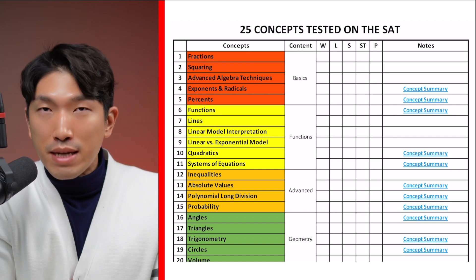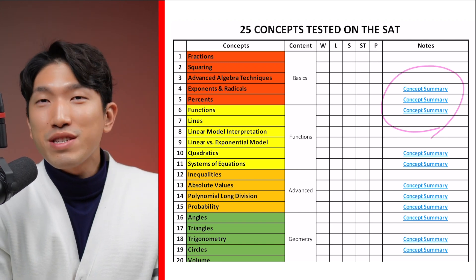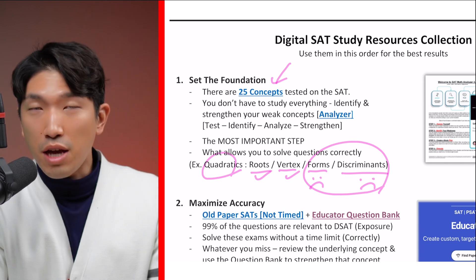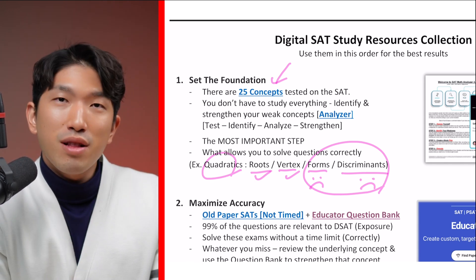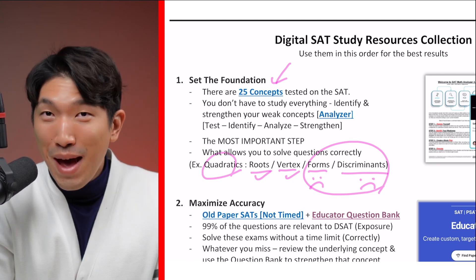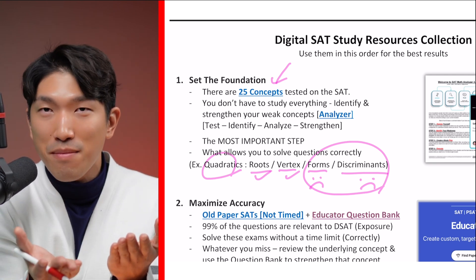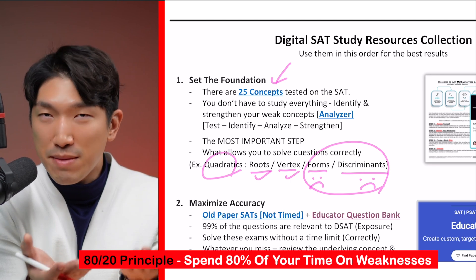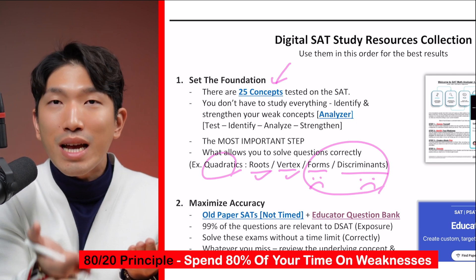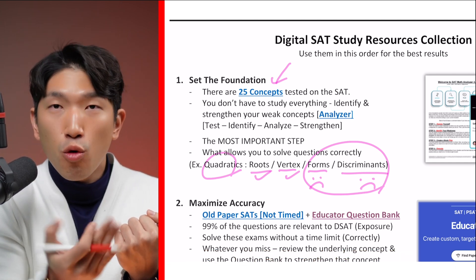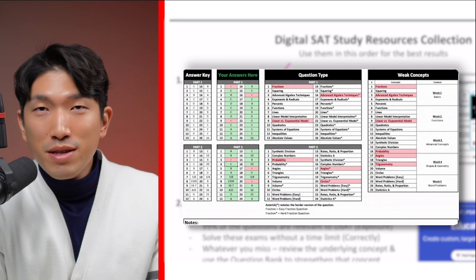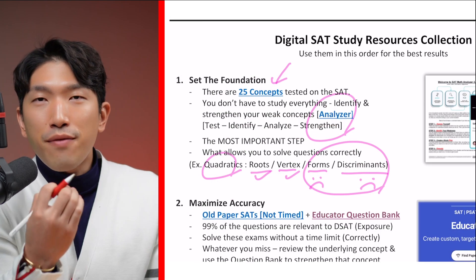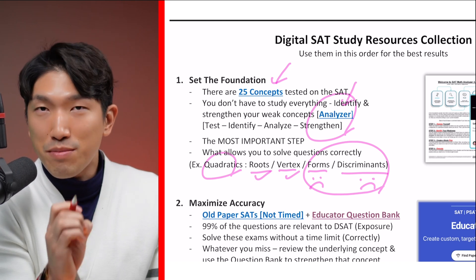You want to master every bit and piece of every single one of these 25 concepts. On the right side there's a concept summary which shows you exactly what you need to know for these topics and how the SAT is going to test you on them. To get this list, just click the link. But before you start studying everything on that list, realize that you don't have to study everything — you're probably not bad at every concept. What's holding your score down is what you are weak on. So to raise your score as efficiently as possible, identify your weaknesses and focus on strengthening those only. That's exactly where the analyzer comes in: based on your performance, it tells you what you're good at and what you're terrible at, creating a list of things you need to work on.